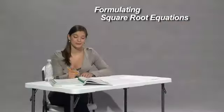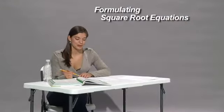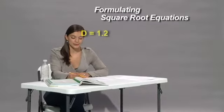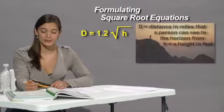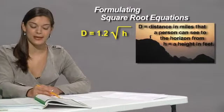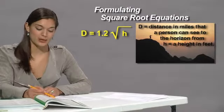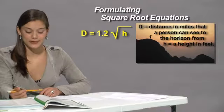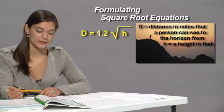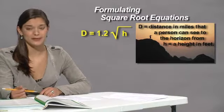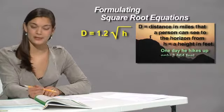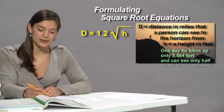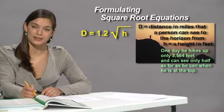Let's look at one more radical word problem. The equation d equals 1.2 times the square root of height gives the distance d in miles that a person can see to the horizon from a height h in feet. David hikes up Long's Peak in Rocky Mountain National Park almost every weekend. Some days, he doesn't make it all the way to the top. One day, he hikes up only 3,564 feet and can see only half as far as he does when he's at the top.